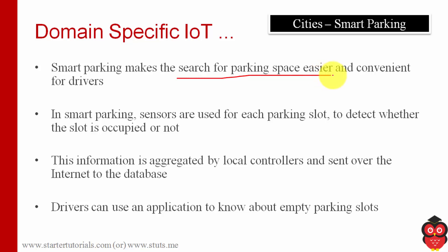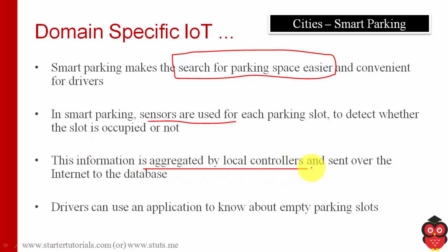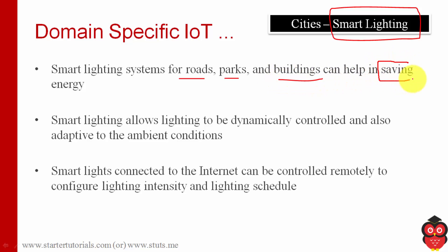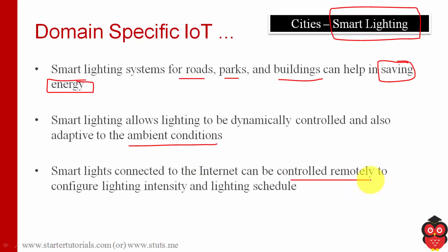This makes searching for parking space much easier. Drivers can use a mobile or web application to view empty parking slots across the city. Similar to home automation, we can also have smart lighting systems in cities — a city-wide smart lighting system for roads, parks, and buildings. The advantage is the same: saving energy by automatically turning lights on and off based on ambient conditions, and also managing and controlling lights remotely.